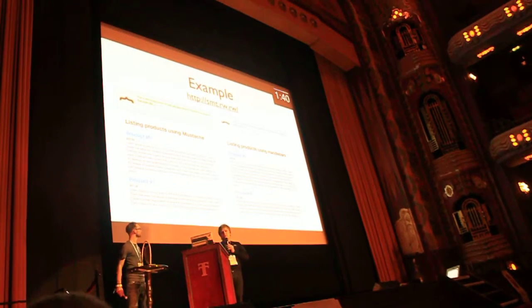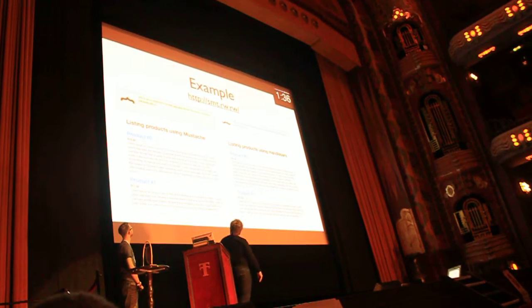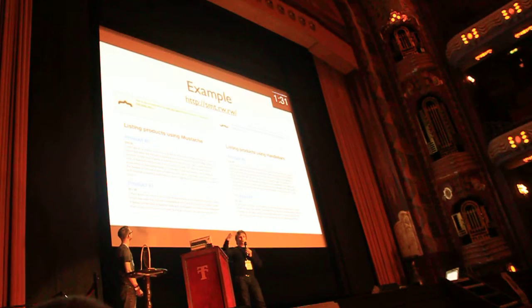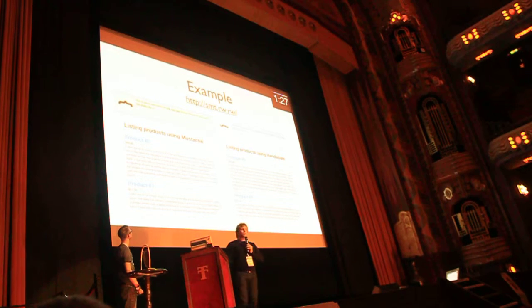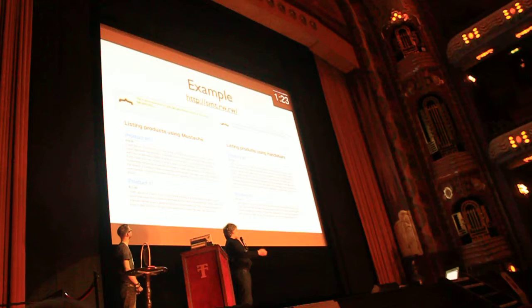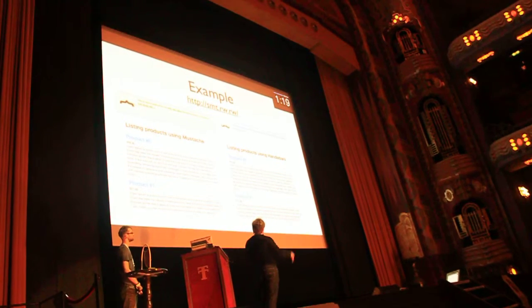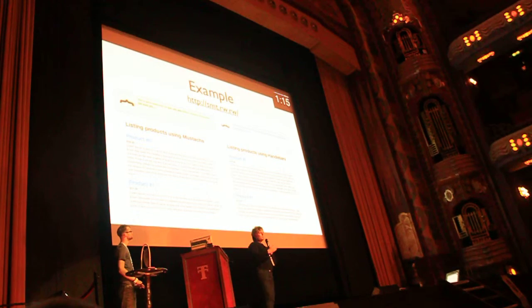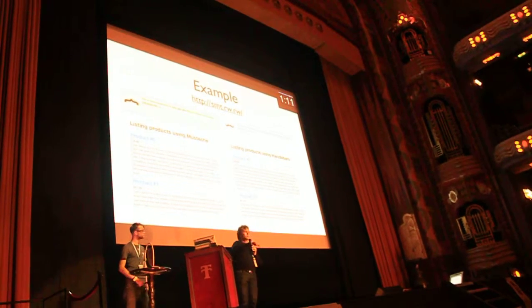You can see a live example at the provided link. In this example, the first 10 products are rendered on the server side, and the page has infinite scroll functionality. When you scroll, the server sends JSON data for another 10 products, and those products are rendered by the JS templates. So you use one template for both server-side and client-side.